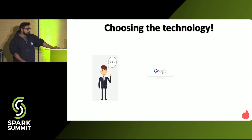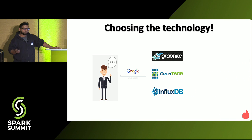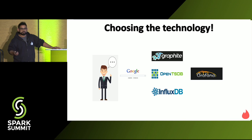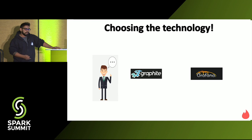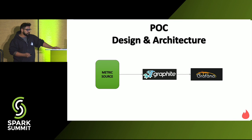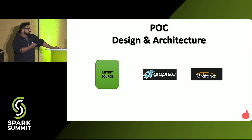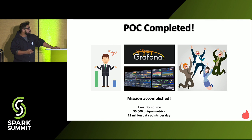He has a very smart friend called Google, so he searched for time series databases and visualization layers, and compared his options. He chose Graphite because it was the most popular one at that point and the community supported it. He chose these two components — Graphite and Grafana — and designed his perfect POC architecture: metric source sending metrics to Graphite, then visualizing them in Grafana. The POC was completed, requirements were met, everybody was happy, and dashboards were up.